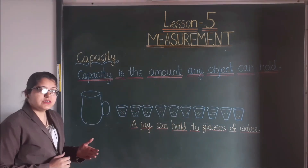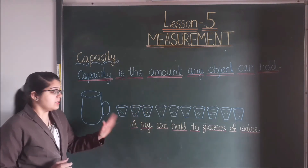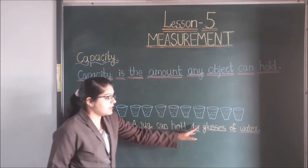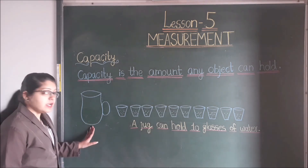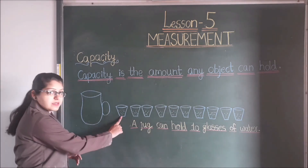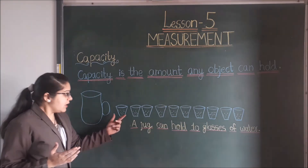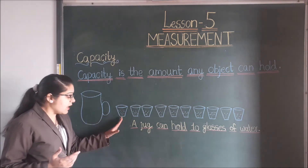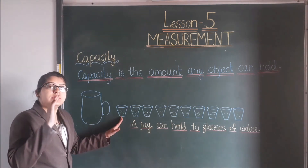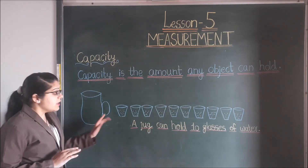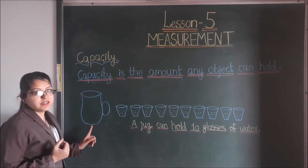We can say: a jug can hold more water than a glass. And a glass can hold less water than a jug. This jug can hold 10 glasses of water.